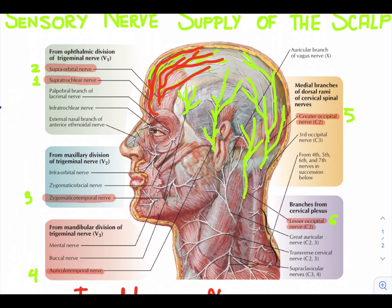The third one is the zygomatico-temporal nerve. Let's trace the zygomatico-temporal nerve. This is the zygomatico-temporal nerve. It is a branch of the maxillary division of the trigeminal nerve and it supplies the scalp over the temple.